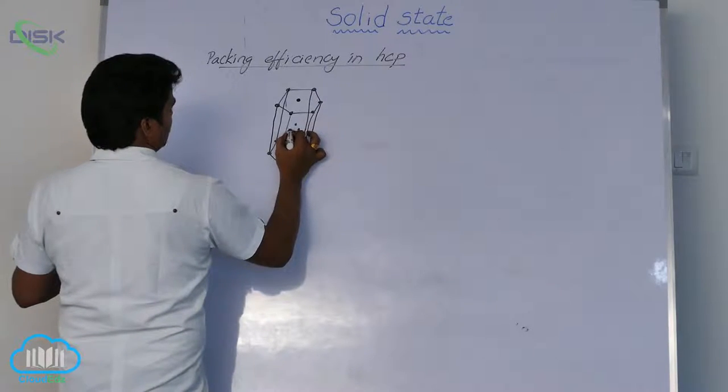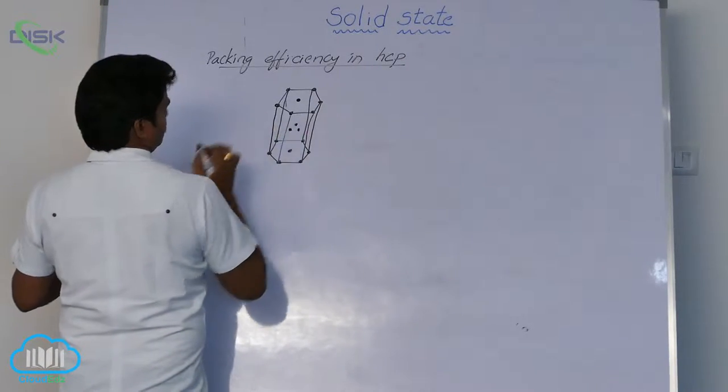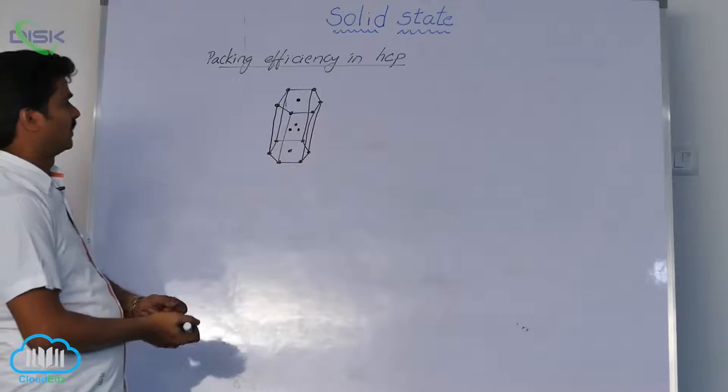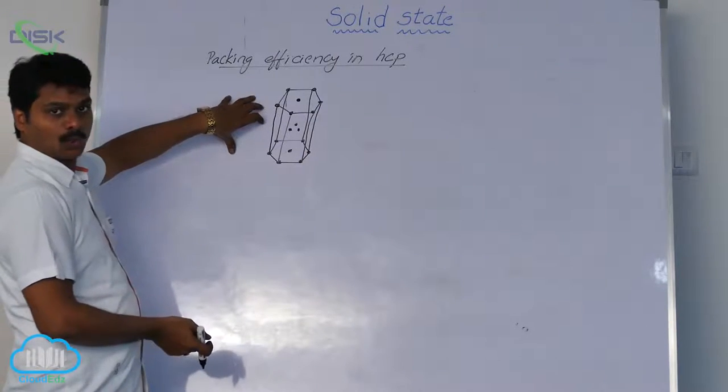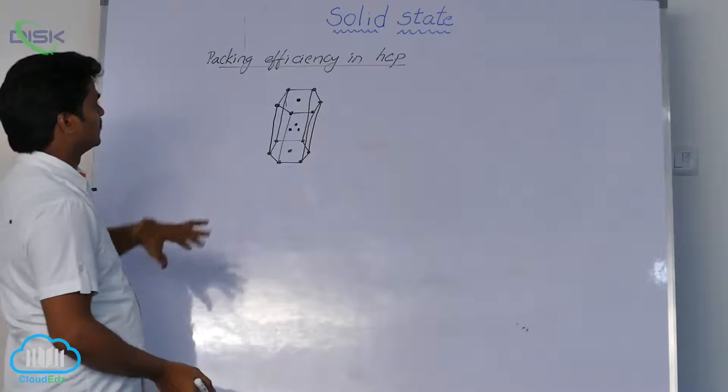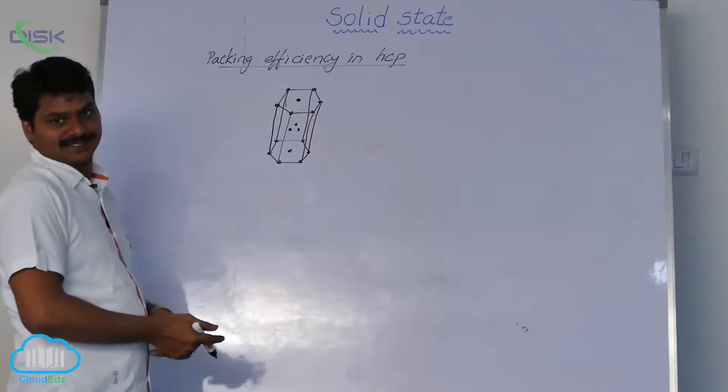There are three atoms at the center. This is the orthogonal close-packed section. In this section, how to calculate that in the HCP?